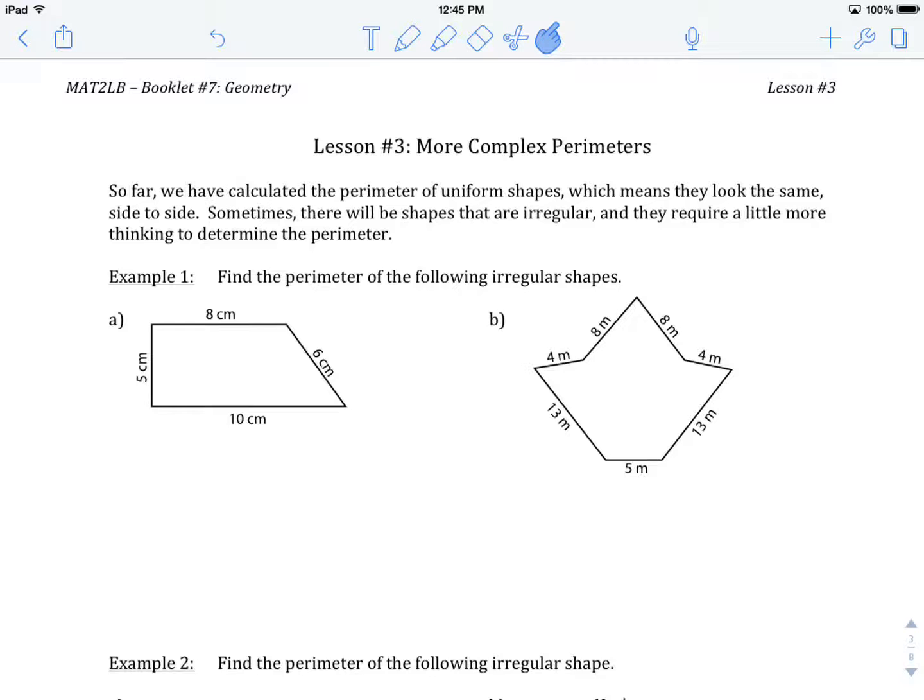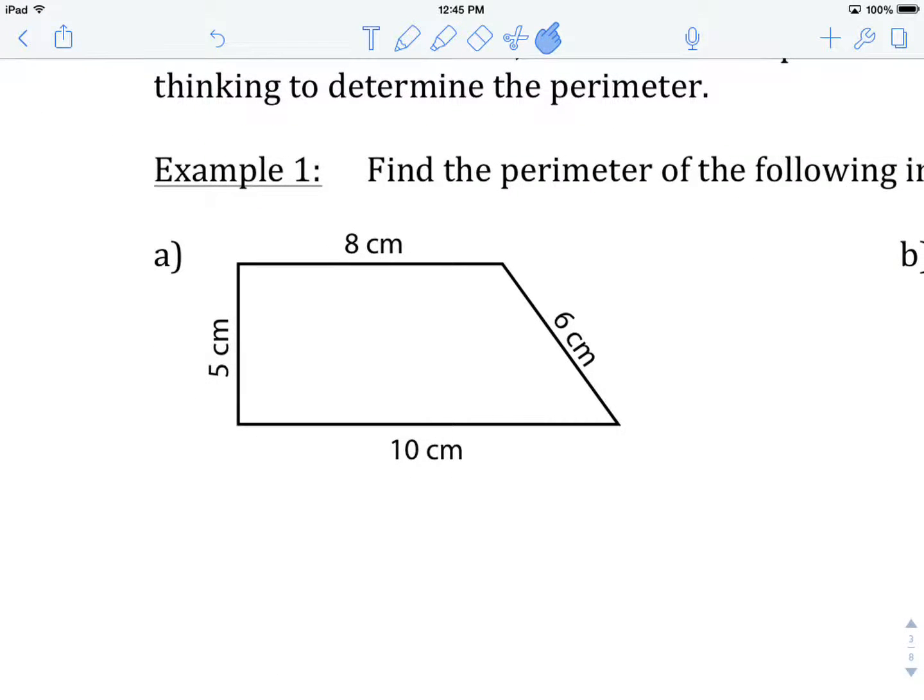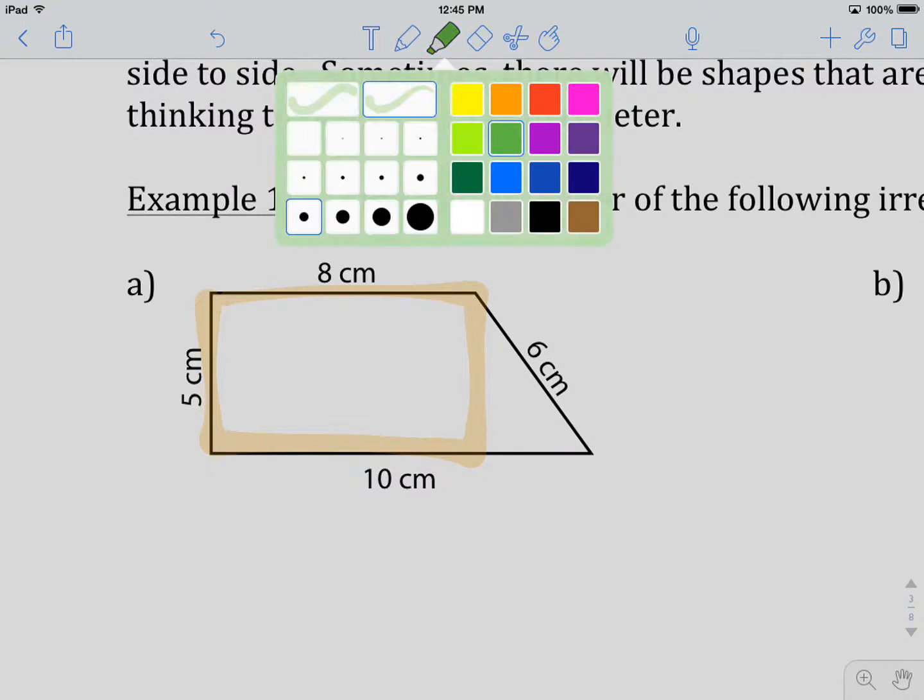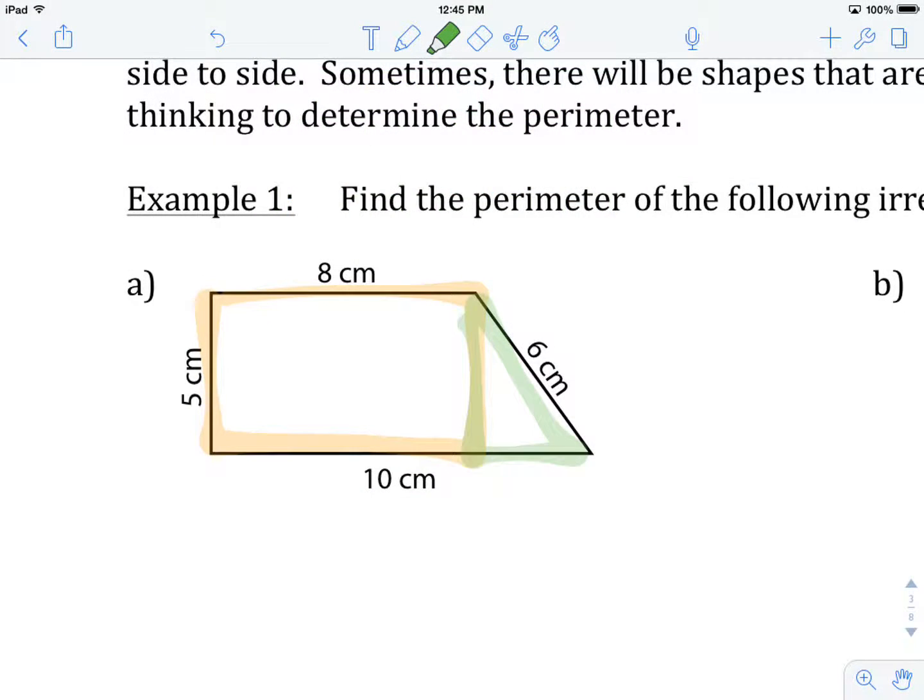So let's start with example number one. Example number one says find the perimeter of the following irregular shapes. So this one here, again, it's sort of like a combination of a rectangle and a triangle, but there are pieces of that that we don't want if we're talking just about triangles and rectangles. So we're going to take the same approach we had before. Let's imagine starting in the corner and walking our way around the outside. So there's one side, two sides, three sides, and four sides.